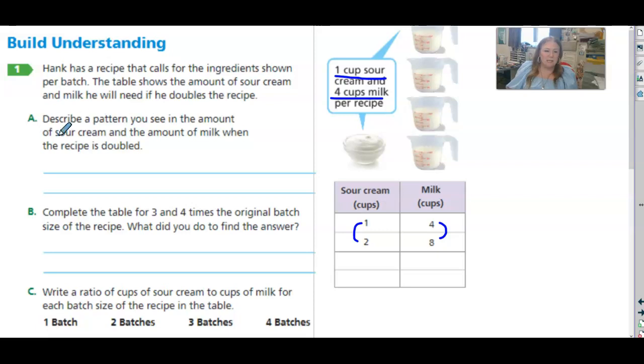So describe a pattern you see in the amount of sour cream and milk when the recipe is doubled. So tell me, how did we get from here to here and here to here? What was the pattern they were doing each time?